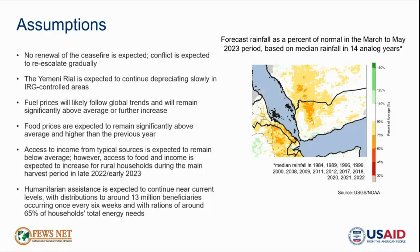Looking at our key assumptions for the projection period: first, we assume that the ceasefire will not be renewed during the projection period, based on increased demands by the SBA side — including payment of civil servant salaries in SBA areas and the reopening of key roads — that are unlikely to be realized during the majority of the projection period. Given this, we assume that conflicts will gradually re-escalate during the projection period, though significant uncertainty exists. In IRG-controlled areas, we expect the value of the real will likely remain generally more stable than in 2021, but will likely depreciate slightly overall, given expectations for foreign exchange and absence of government controls. In SBA-controlled areas, we expect the currency to remain generally stable and close to current levels.